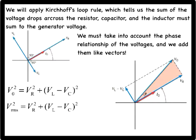Here, for simplicity, we omit the RMS subscripts on the resistor, capacitor, and inductor voltages. Finally, we can write each of the RMS voltages using Ohm's law, remembering that VR equals IRMS times R, VC equals IRMS times XC, and VL equals IRMS times XL.